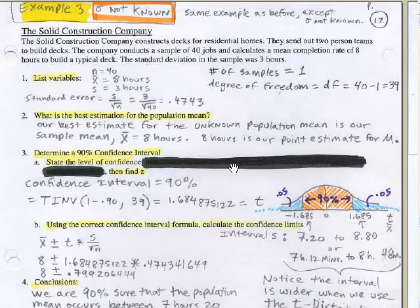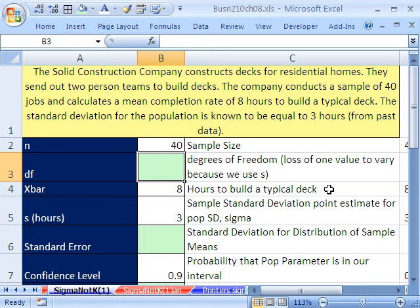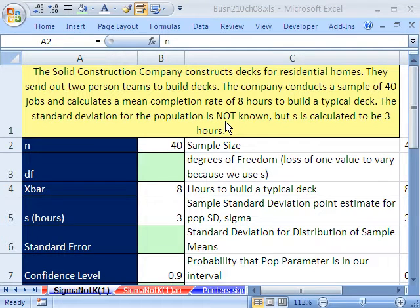Here's the example we're going to be doing. Here's the same one we did before. We just want to do the same calculation but with t. We're not going to assume that we know the population standard deviation, and we'll get a larger interval. The Solid Construction Company constructs decks for residential homes. They send out two-person teams to build decks. The company conducts a sample of 40 jobs and calculates a mean completion rate of 8 hours to build a typical deck. So that mean is from a sample. The standard deviation of the population is not known.